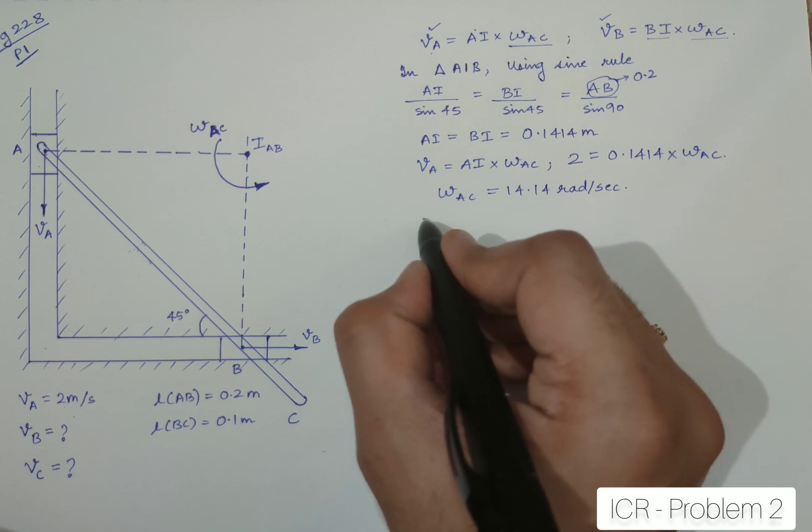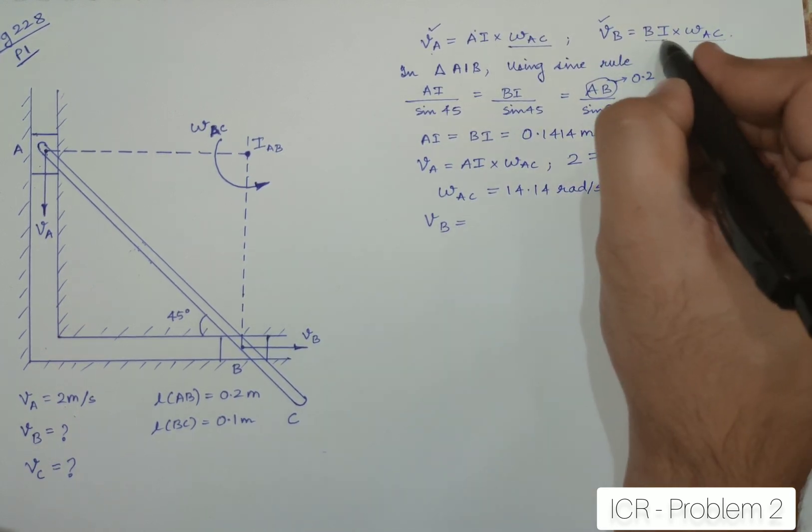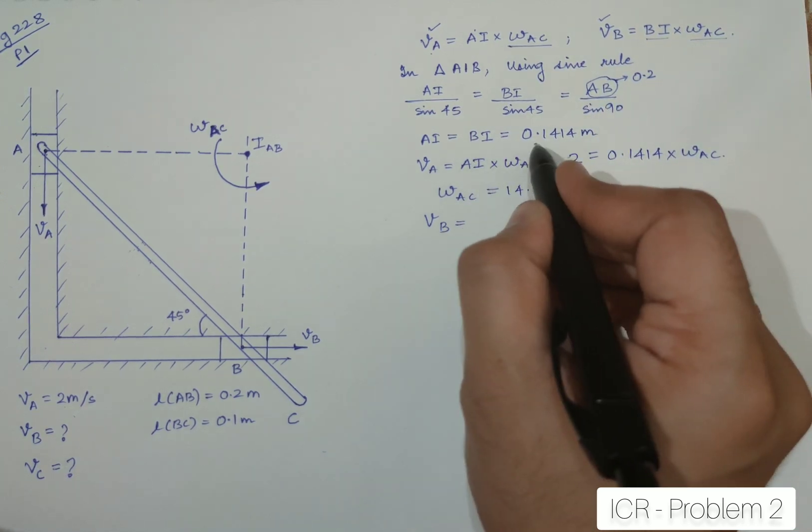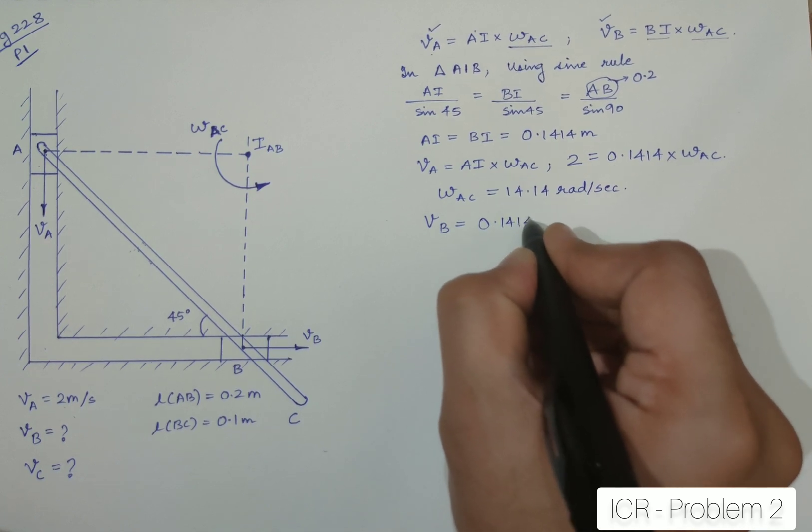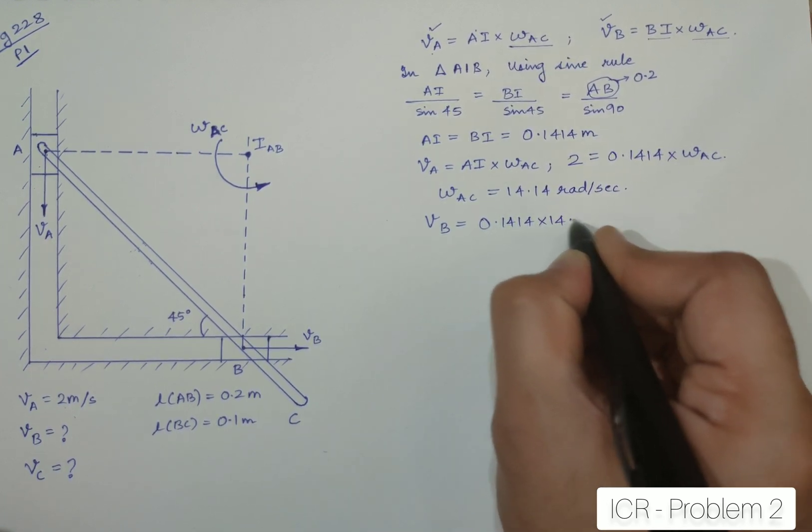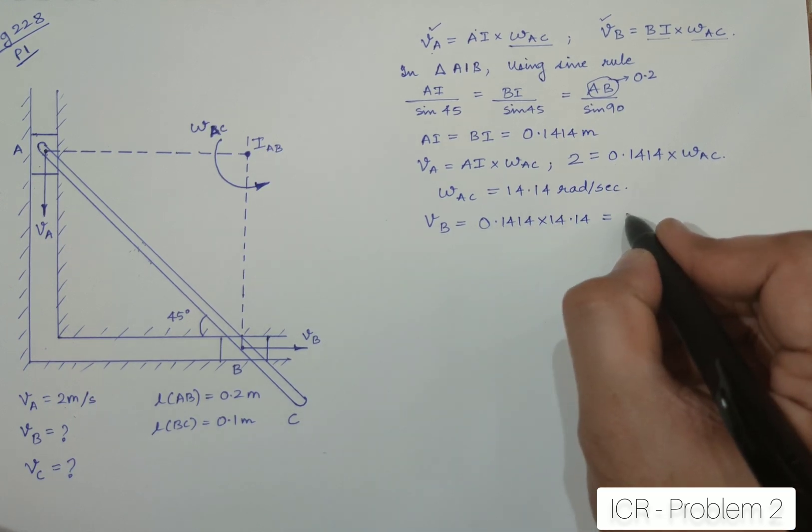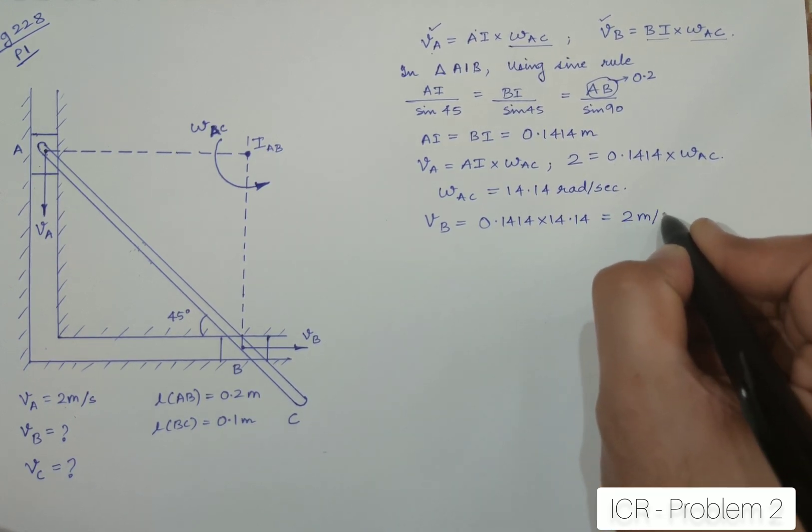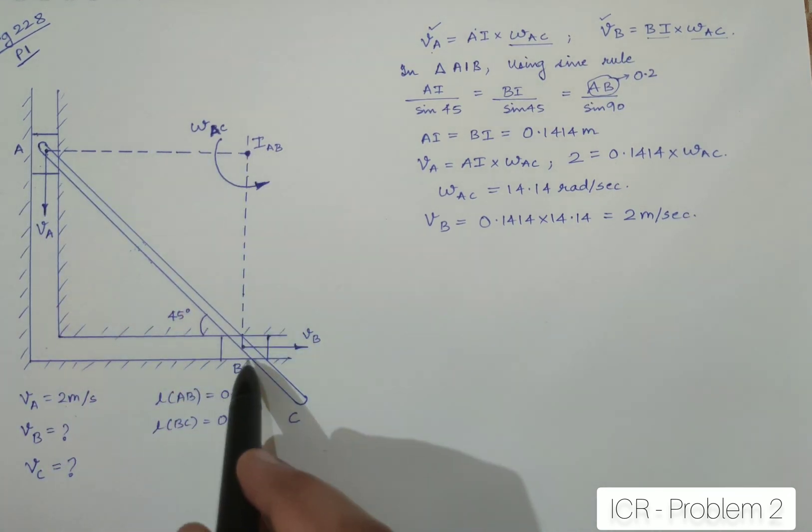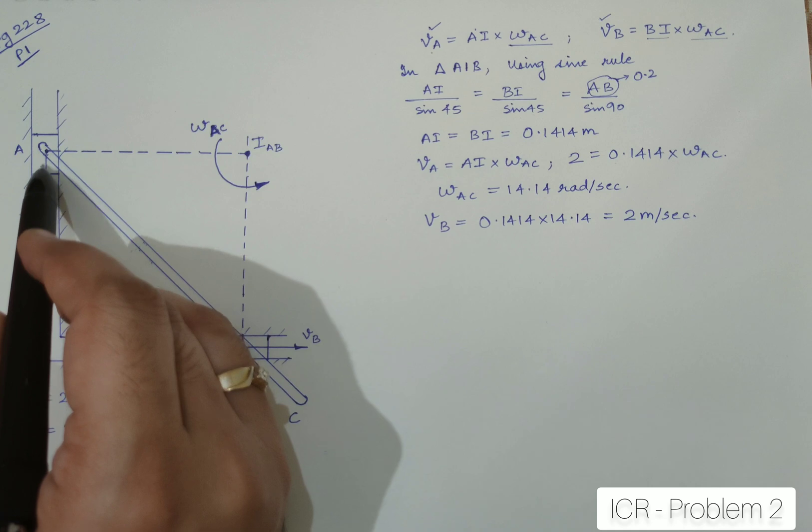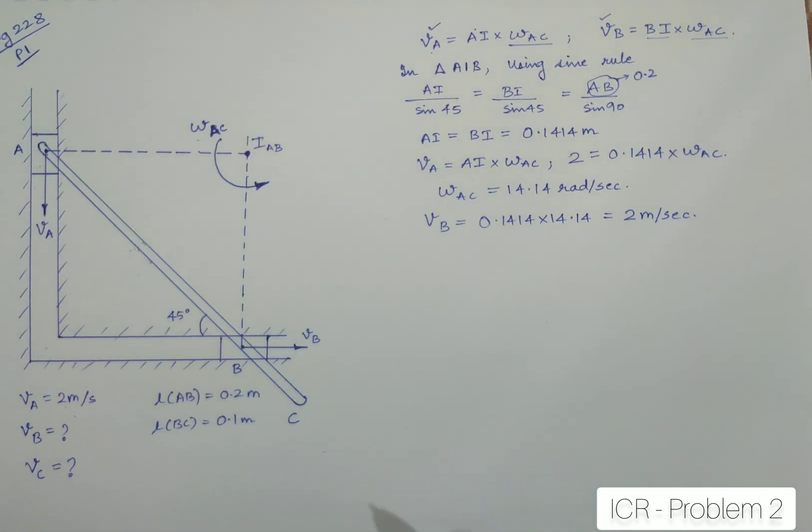Okay. Now, I can definitely jump on to VB. VB will be equal to, as we got over here from BI, and BI is 0.1414, so just substituting the value will give you the VB which is coming out to be again 2 meters per second, which is quite obvious. Why? Because the length is the same and depending upon the length the velocities will definitely be same because omega AC is constant for them.